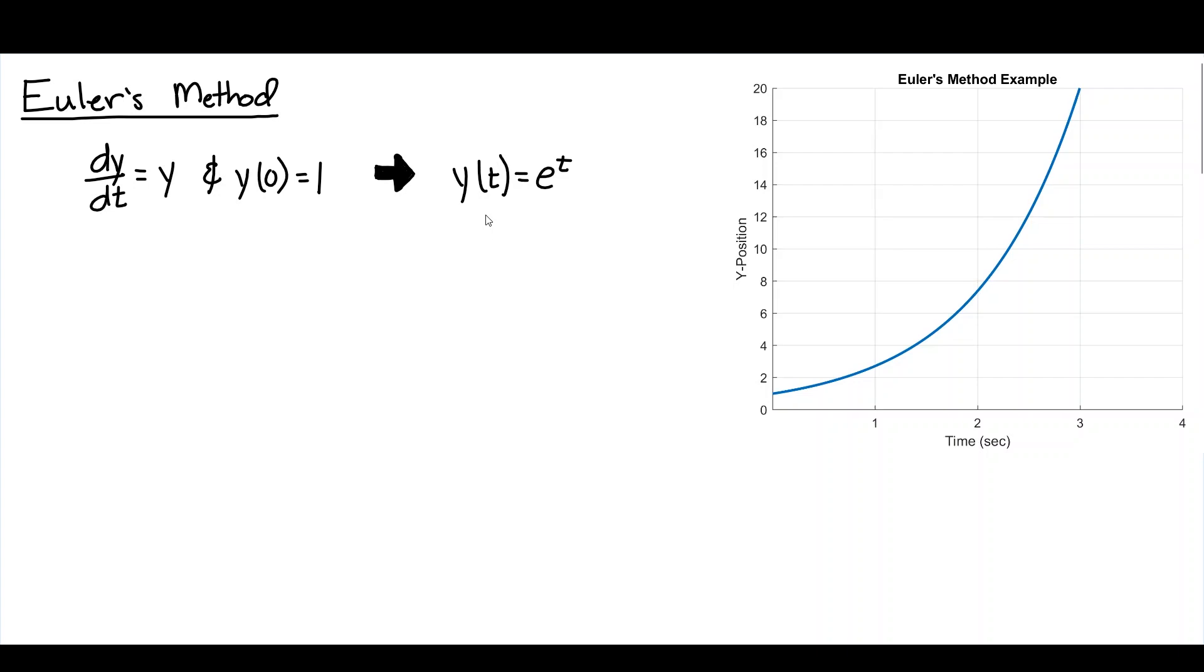Let's suppose we didn't know this exact solution or how to get it for that matter. How could we possibly estimate this exact solution numerically given what we know? Well we know that at time equal to 0 that the position is equal to 1. That's given by our initial condition. We also know by our differential equation that the slope dy/dt is equal to y. So at this position it must be equal to 1. I'm going to go ahead and make this into a table because we're going to start predicting forward in time in estimating what this exact solution may be.